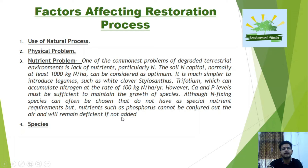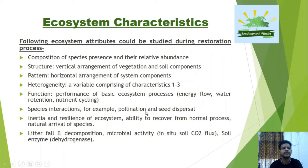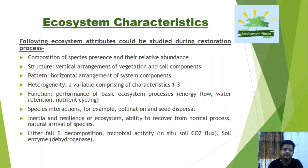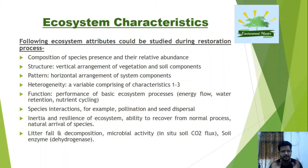Species is the fourth factor affecting the restoration process. Ecosystem attributes to study include: composition of species, presence and relative abundance, structure, pattern and heterogeneity, functions, species interaction, inertia and resilience of the ecosystem, and litter decomposition. An ecosystem involves the structural and functional behavior between different communities and their surroundings, including not only interactions but also material exchange.